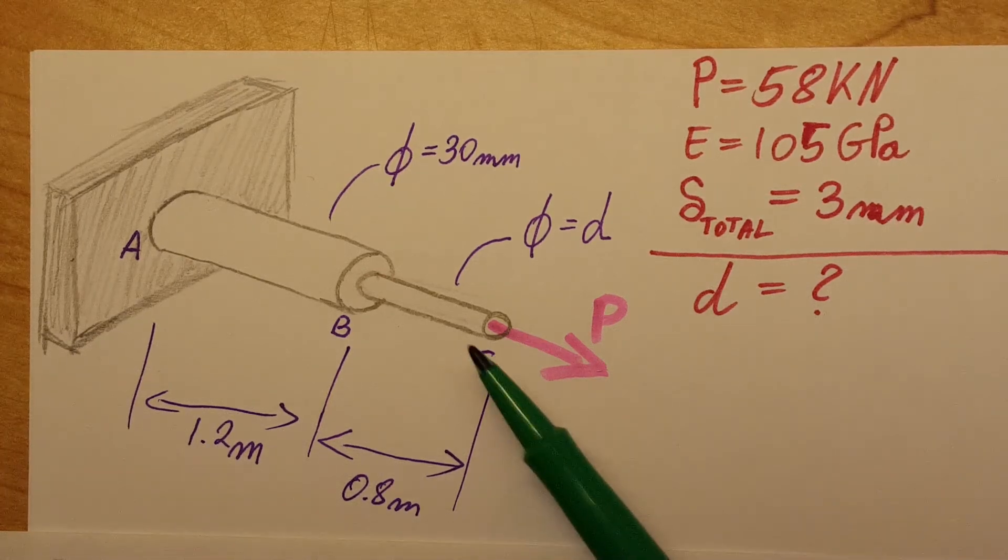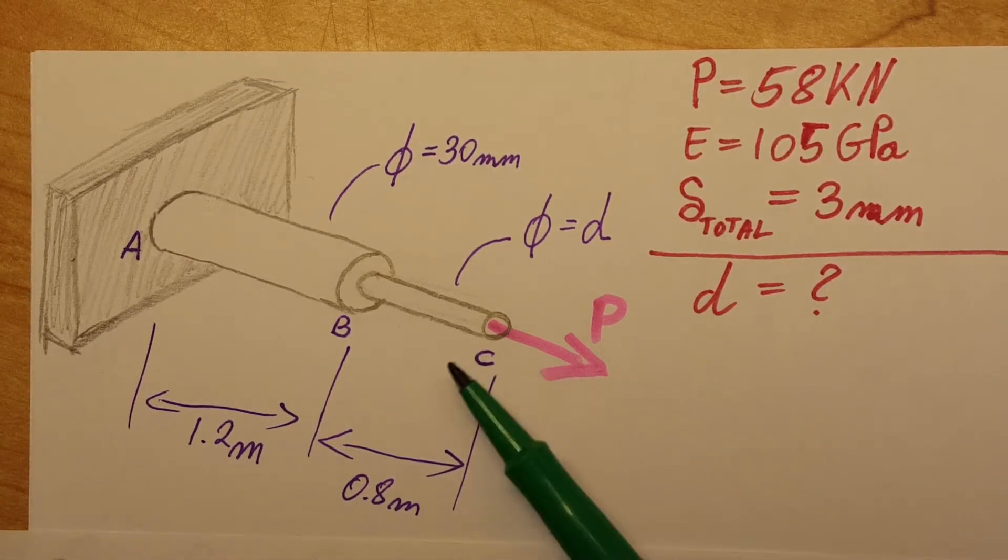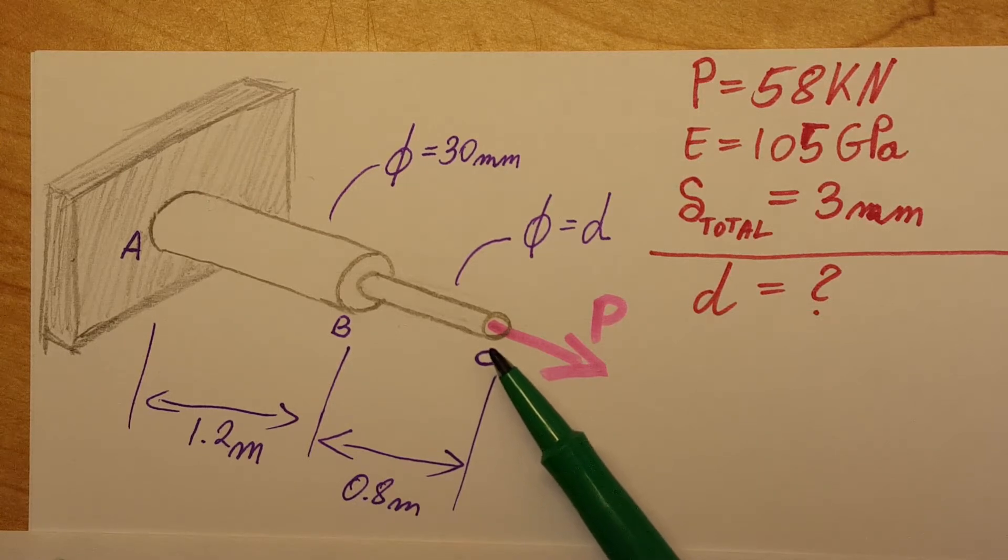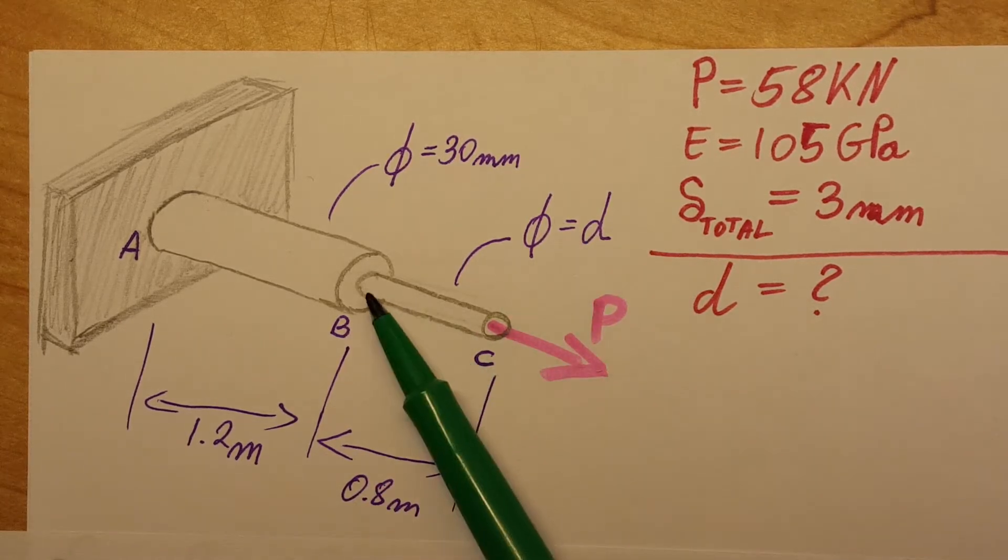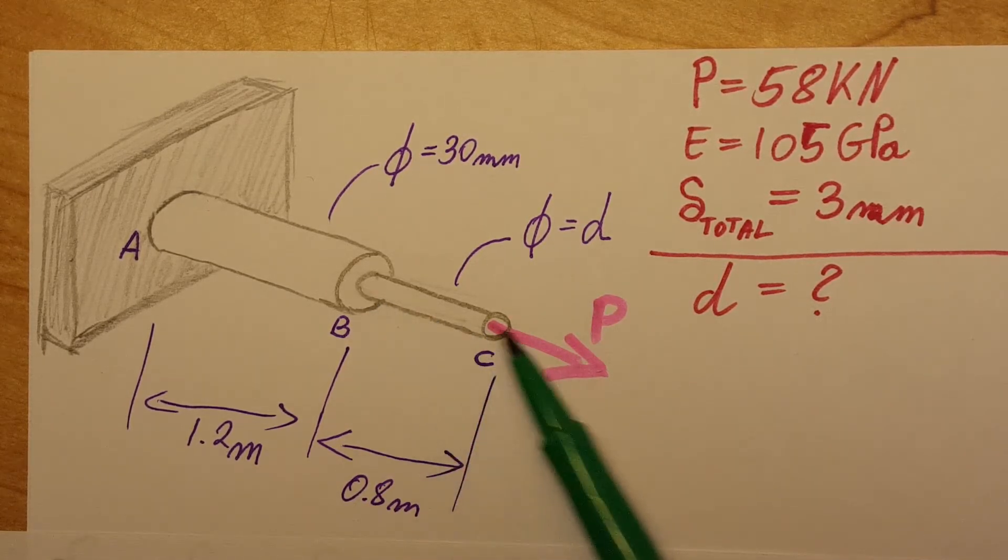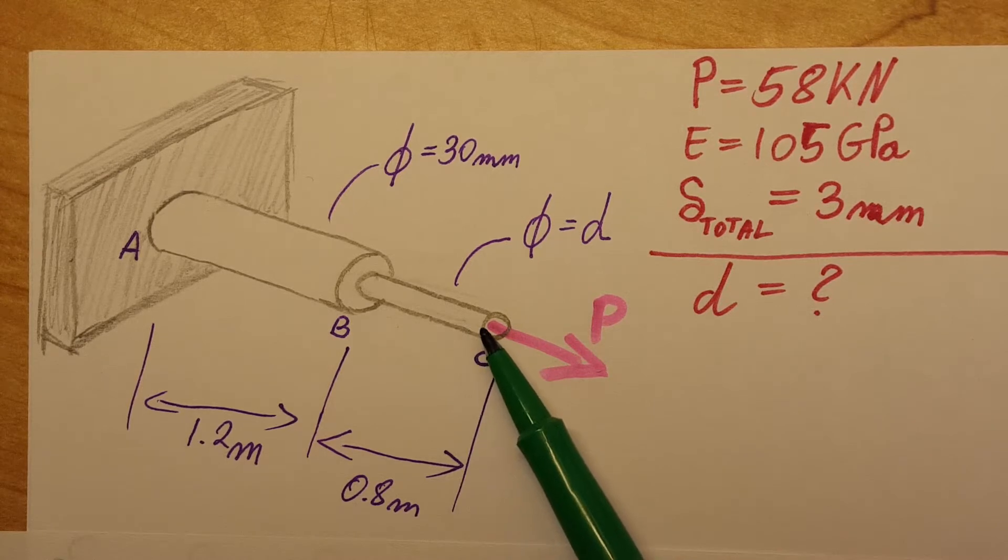In this problem we have an axial loading that is applied at point C and it's 58 kilonewtons. They want us to determine the diameter of this section from B to C in such a way where the total elongation will be three millimeters.